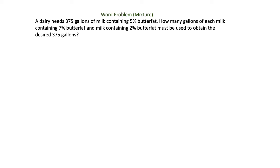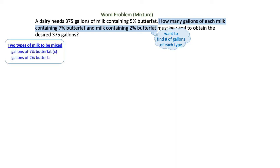In this video we are going to write a system of equations to solve a word problem involving a mixture at a dairy. If you read the problem you will see that it's asking how many gallons of two types of milk are going to be used in this mixture. So we have to find the number of gallons of each type of milk and the two types are the 7% butterfat and the 2% butterfat.